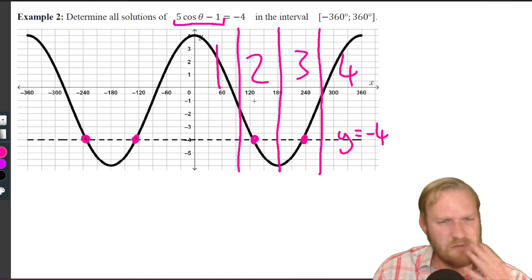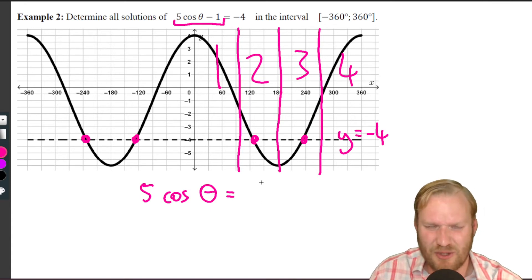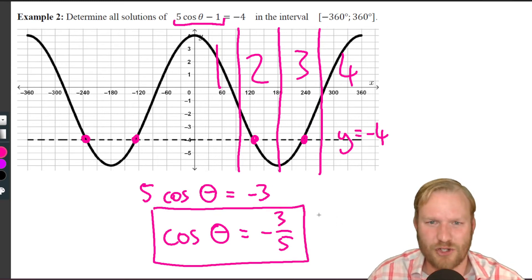Let's work on our equation so that we make it look a little bit more like cos(θ) equals something. 5cos(θ), let's add one to both sides and we get negative three. Divide both sides by five and we have cos(θ) equals negative three over five.